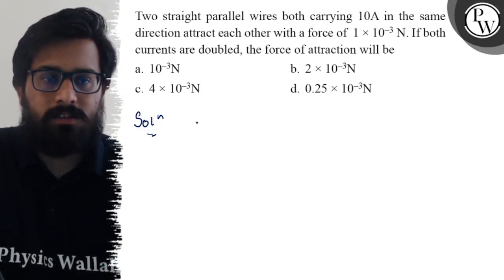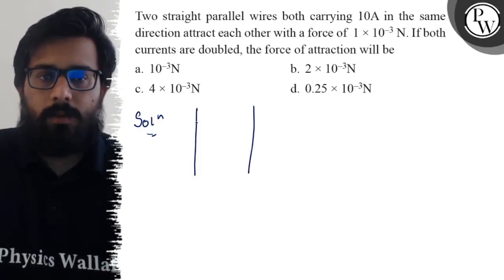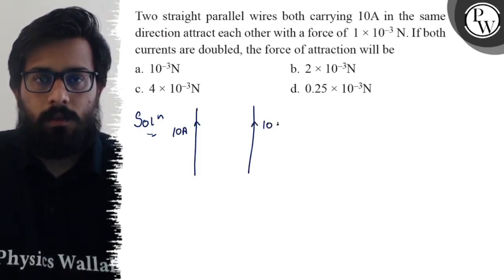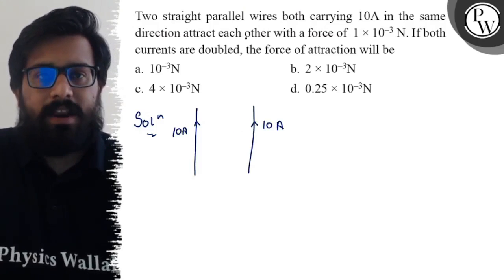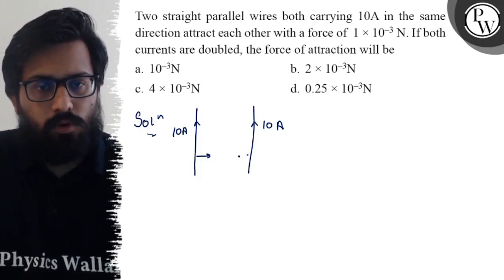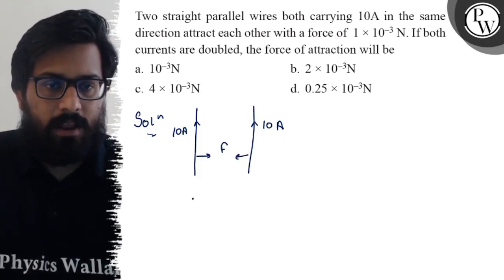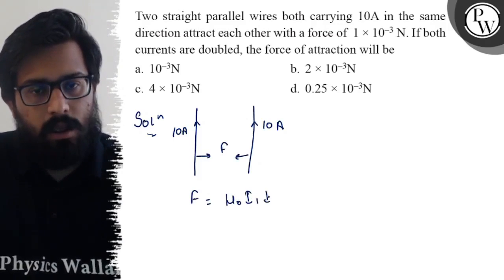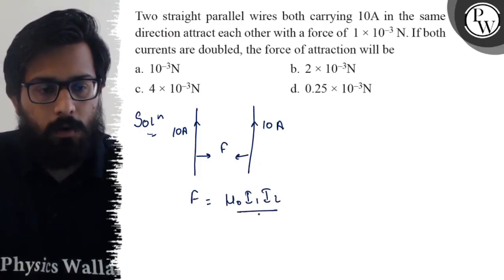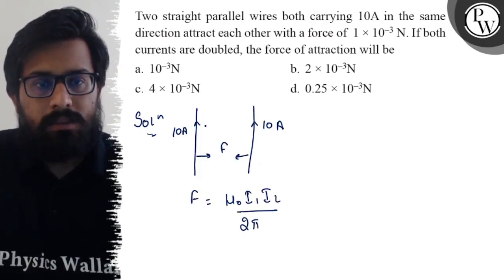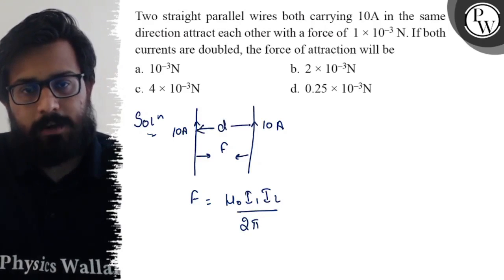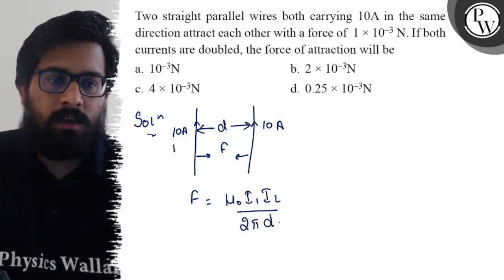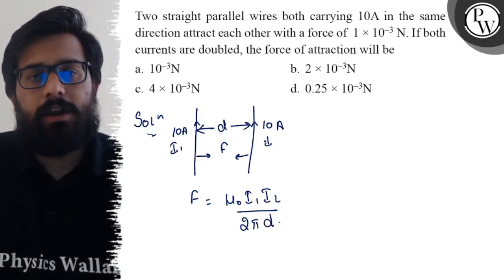In this question we have two straight parallel wires both carrying a current of 10 ampere in the same direction, and they attract each other with some force. This force is given by F = (μ₀ × I₁ × I₂) / (2π × d), where d is the separation between the wires, I₁ is the current in the first wire, and I₂ is the current in the second wire.